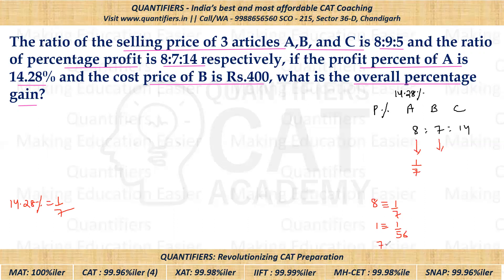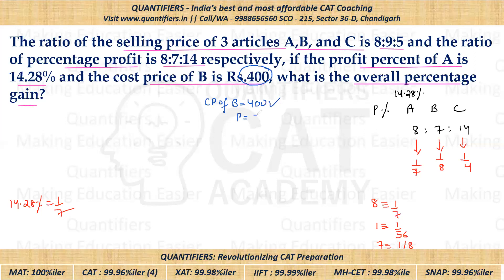Working through the ratios, the profit percentage of C comes out to 1/4, and the profit percentage of B is 1/8. So, profit of B = 1/8 of cost price. Cost price of B is ₹400, so profit = 1/8 × 400 = ₹50. Therefore, selling price of B = 400 + 50 = ₹450. We know the selling price of B and the ratio of selling prices A : B : C = 8 : 9 : 5.